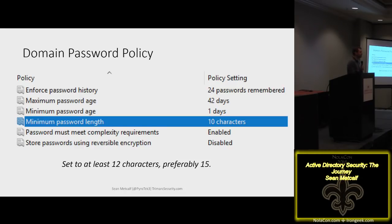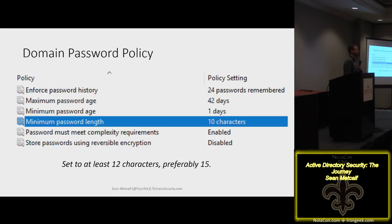Force password changes every 90 days is too frequent. A better approach: get password length up to 14 or 15 characters, change once a year or every six months, and train users to use passphrases — not just 'horse staple battery' but actual sentences. Active Directory supports spaces. 'My favorite song is Sweet Home Alabama!' — that's a great password. It's long, complex, and a password cracker targeting the domain minimum character limit will never even attempt it.